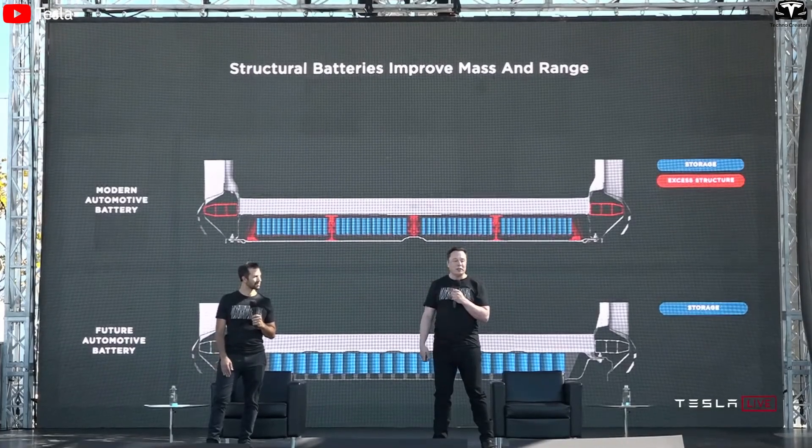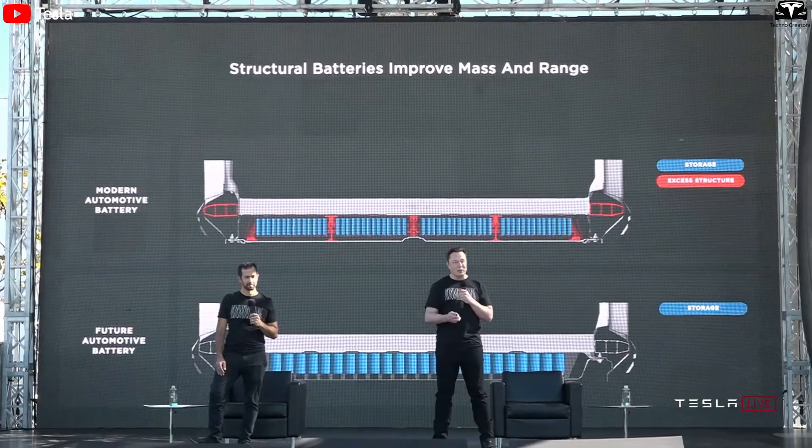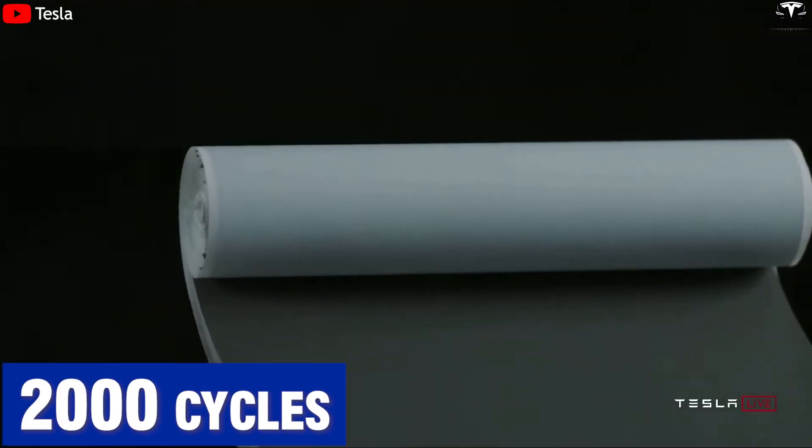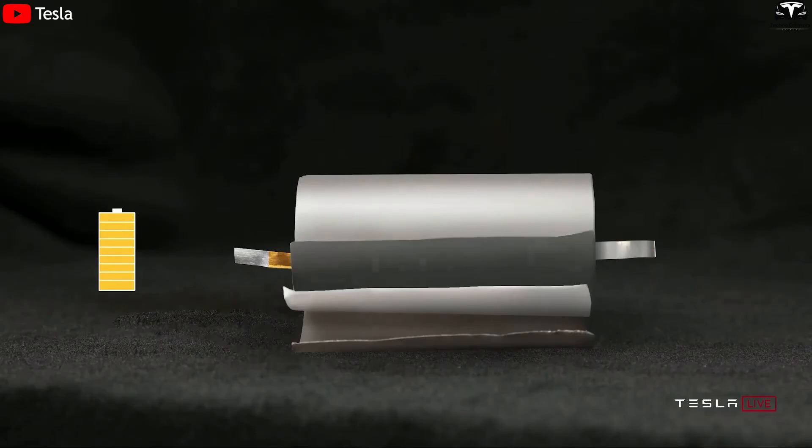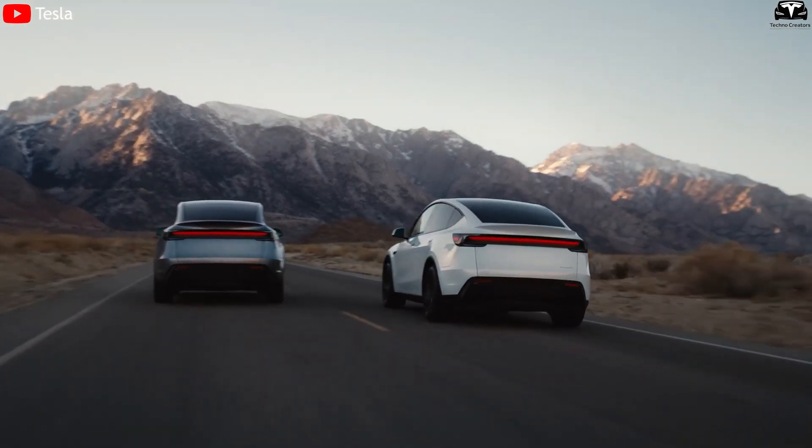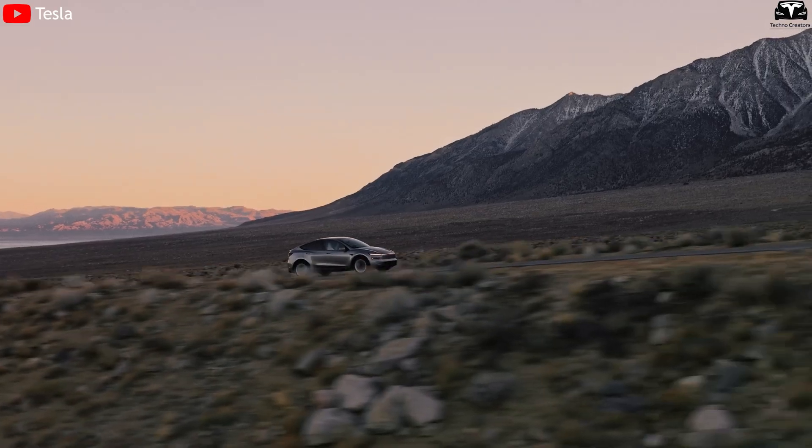Regarding lifespan, G-plus AI batteries show outstanding performance, withstanding over 2,000 charge-discharge cycles without significant capacity loss. This level can power vehicles for more than 1 million kilometers, two to three times longer than many current lithium batteries.